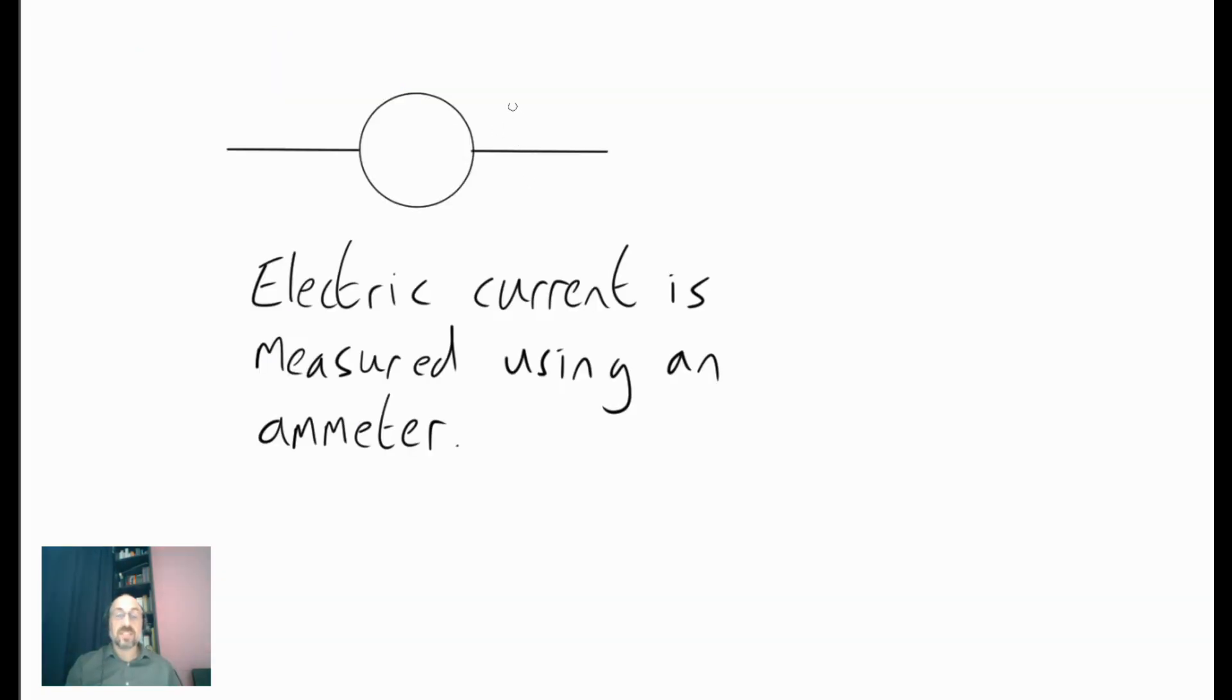Measuring electric current is really straightforward. All you need is a device called an ammeter. Now, an ammeter, the symbol for it looks something like this. You have the wire leading into it, the wire coming out of it. You have a circle and in the middle, you just put a capital A and that will be the symbol for an ammeter. It's really important that you use the word ammeter and don't use words like ampmeter and so on. The exam boards are often very strict about this.